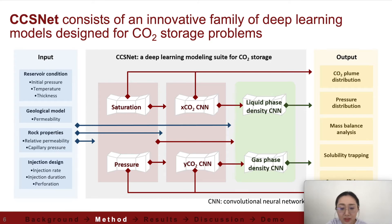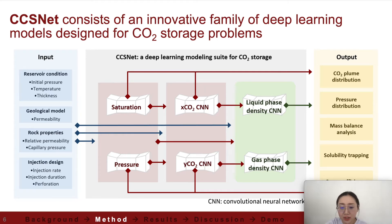We designed CCSNet with a prediction sequence to provide all of these outputs. In this prediction sequence, we have six CNN models — CNN stands for convolutional neural network. We have a saturation CNN, a pressure CNN, two molar fraction CNNs which calculate the molar fraction of CO2 in the liquid and gas phase, and also two auxiliary density CNNs. Combining the outputs from these six models, we can collaboratively provide all of the defined outputs.